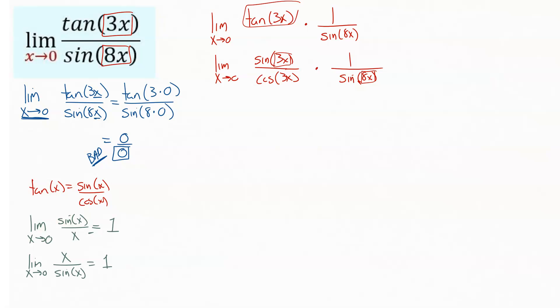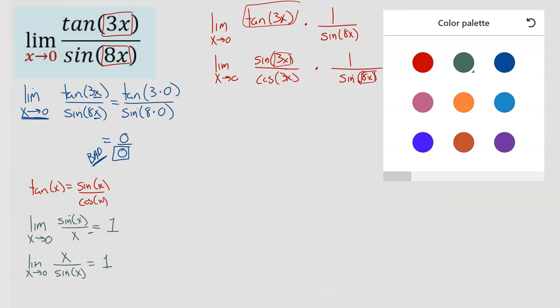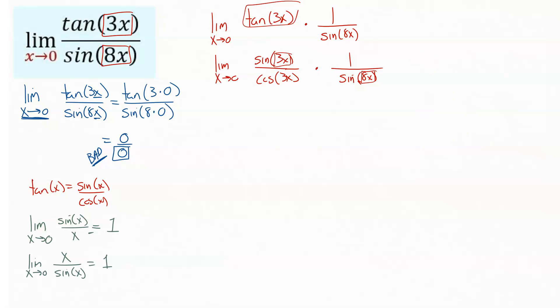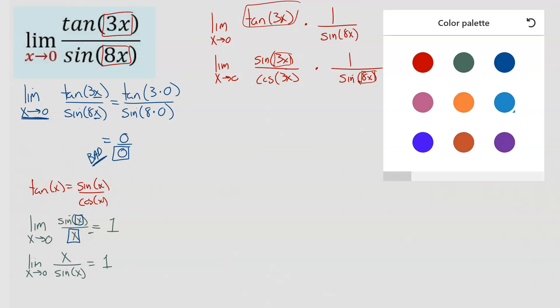The key when using this identity is not that you need an x on the inside. It's really that you need whatever is inside your sine function to match whatever is outside your sine function. And so that's where we come in here and start trying to add in some pieces to get that matching stuff to work.